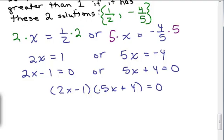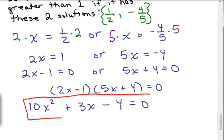2x times 5x is 10x squared. Outer is plus 8x. Inner is minus 5x. That's plus 3x. Minus 4 equals 0. And again, the only way you know for sure that it's correct is by plugging in each of these solutions one at a time, making sure that it really is a solution.